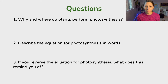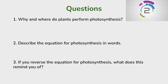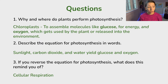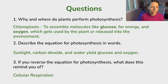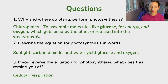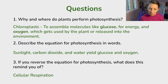Let's do a few questions at the high school review level. Why and where do plants perform photosynthesis? They perform it in the chloroplasts to assemble molecules like glucose for energy and oxygen, which gets used by the plant or released into the environment. Describe the equation for photosynthesis in words: sunlight, carbon dioxide, and water yield glucose and oxygen. If you reverse the equation for photosynthesis, what does this remind you of? Cellular respiration.